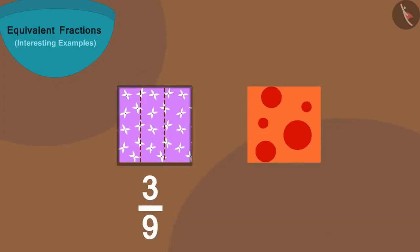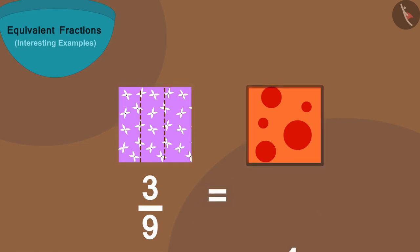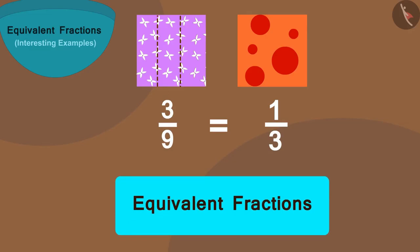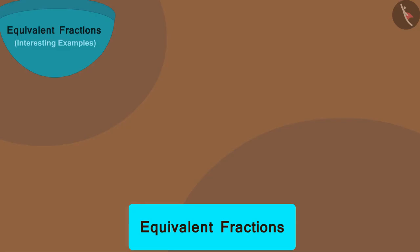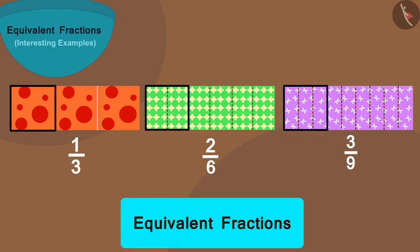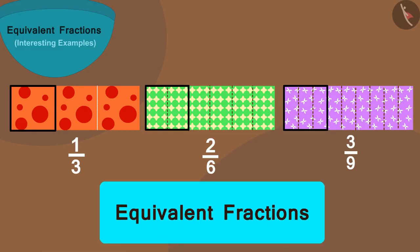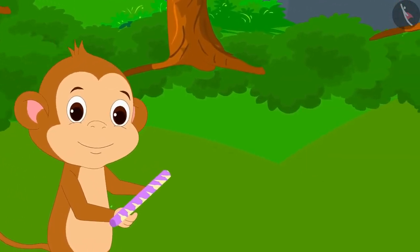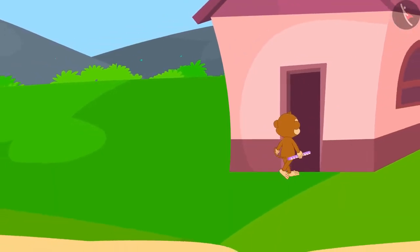Therefore three-ninth of Chanda's cloth is equal to one-third of Babban's cloth, and these two are also equivalent fractions. In this way, one-third is equal to two-sixth is equal to three-ninth — all these are equivalent fractions. Babban took three-ninth part of Chanda's cloth from her and happily returned home.